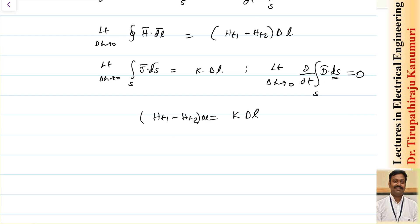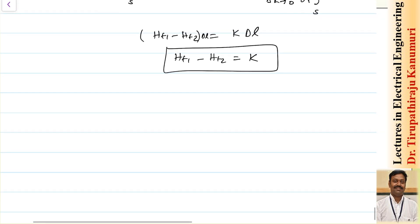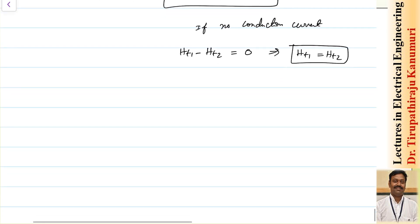From this, Ht1 minus Ht2 equals K. If the boundary has no conduction current, then Ht1 minus Ht2 equals 0, or Ht1 equals Ht2.